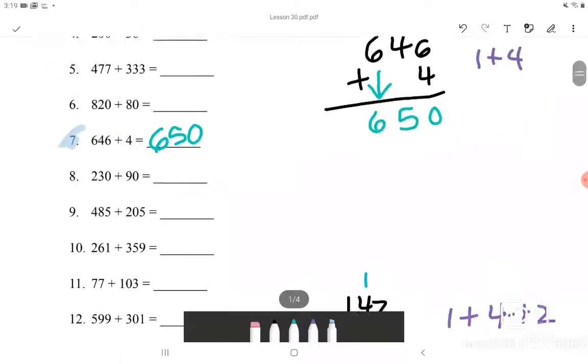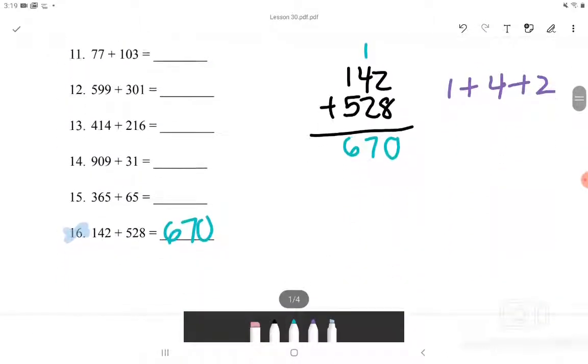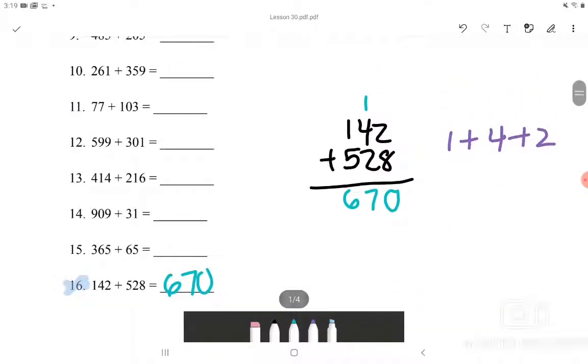Now I went over addition of 3 digit number to 1 digit number, 3 digit with 2 digit, and 3 digit with 3 digit. And whatever digits you add, you always have to make sure that you add them and line them up by correct places.